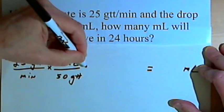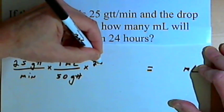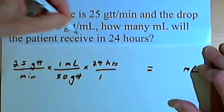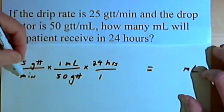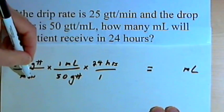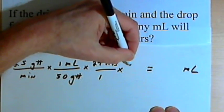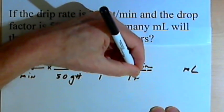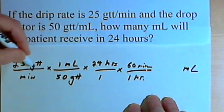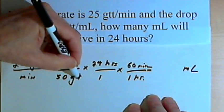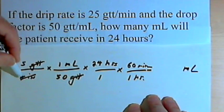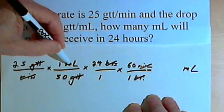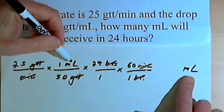I've got a 24-hour time period, so that's 24 hours over 1 to keep everything as a fraction. Once again I want to convert hours to minutes, so I'll use the fraction 60 minutes over 1 hour. Now we'll cancel out the units: the gtt cancel, the minutes cancel out, the hours cancel out, and I'm left with milliliters — that's what I want to end up with.